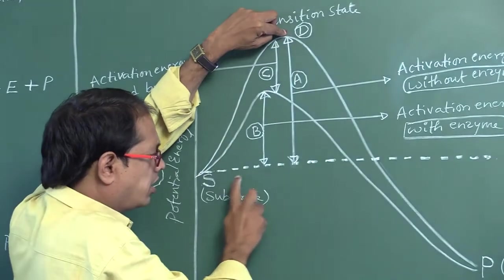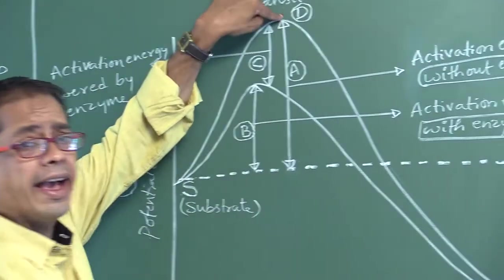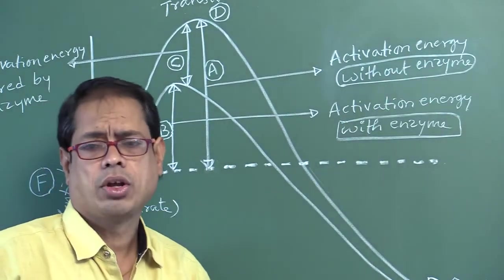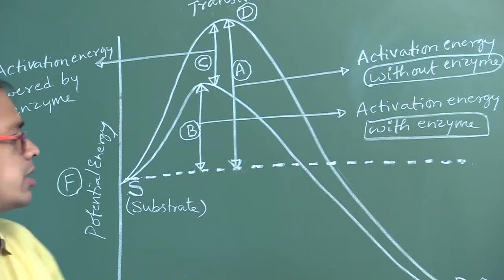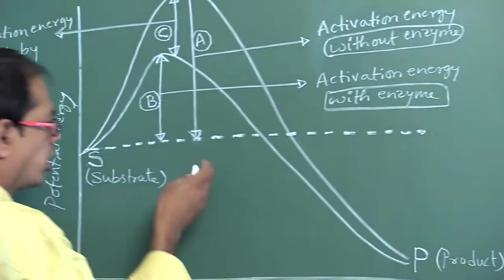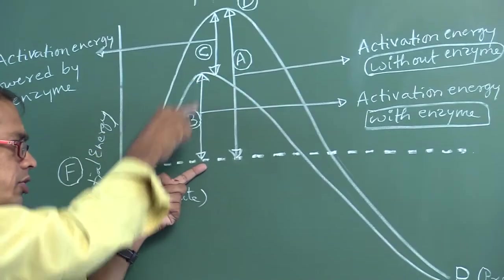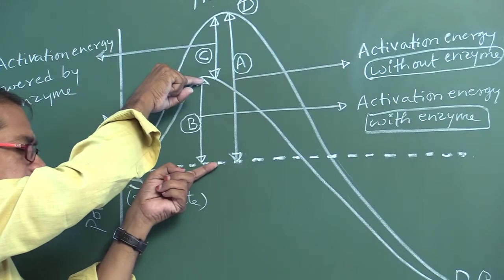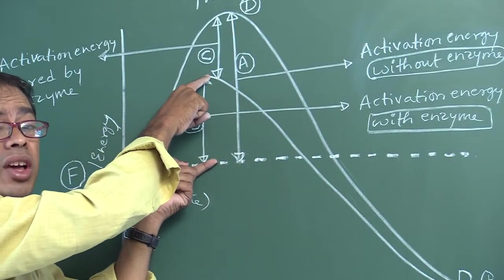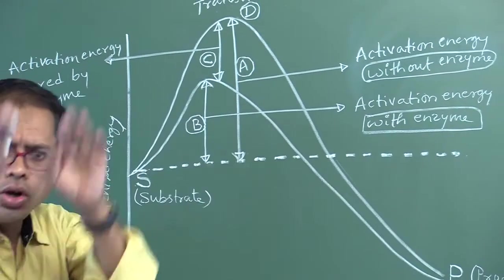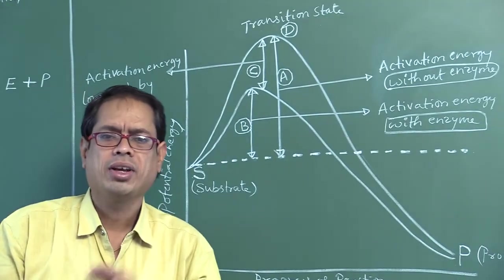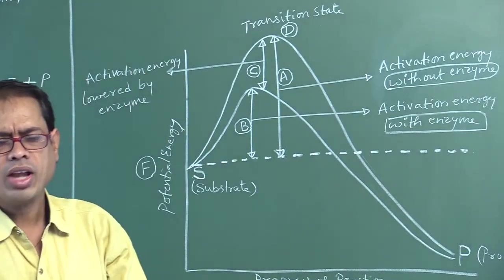The difference between the substrate and the transition state is called activation energy. Without the enzyme, this is the activation energy. Now using the enzyme: substrate is converted into products with a lower activation energy. Activation energy is lowered or decreased by using the enzyme. Why do we use enzymes in chemical reactions? To lower the activation energy.